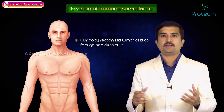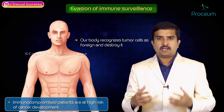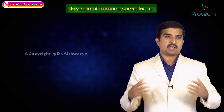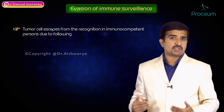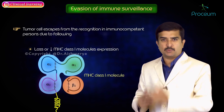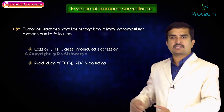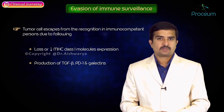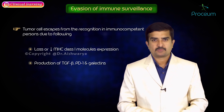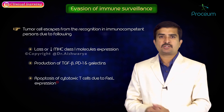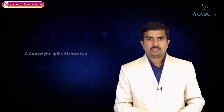The body recognizes tumor cells as foreign and destroys them, so immunocompromised patients are at very high risk of cancer development. Tumor cells can escape recognition in immunocompetent persons mainly due to decreased MHC class I molecular expression, production of TGF-beta and PD1, gelatinase-mediated immunosuppression, and apoptosis of cytotoxic T cells due to Fas ligand expression on tumor cells.